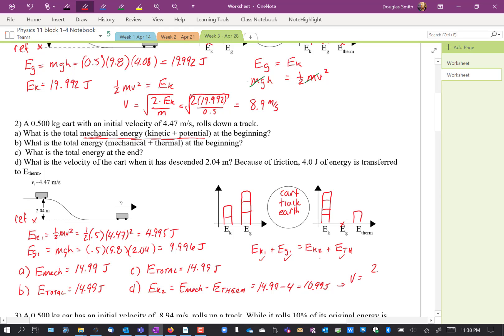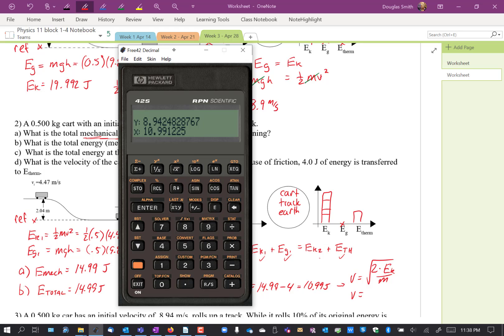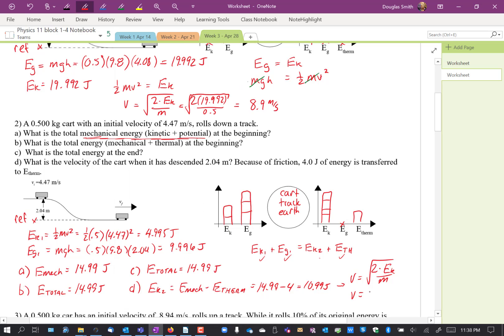Velocity is 2 times EK divided by M, square root. So we must subtract 4 from that, so it's 10.99. So I'm going to multiply that by 2, divide by the mass, 0.5, square root, 6.63 meters per second.